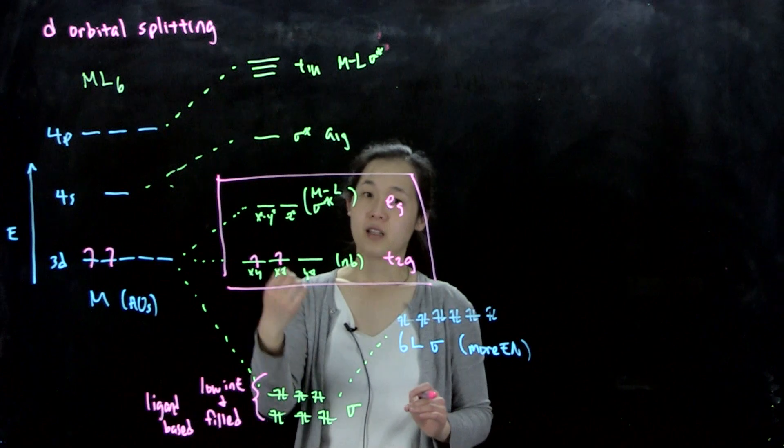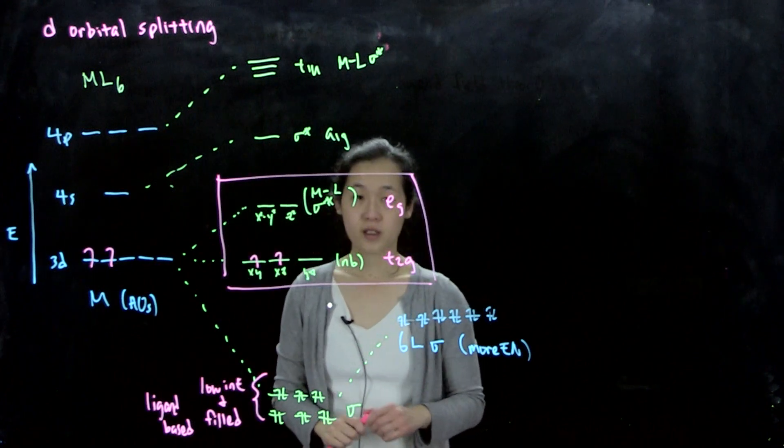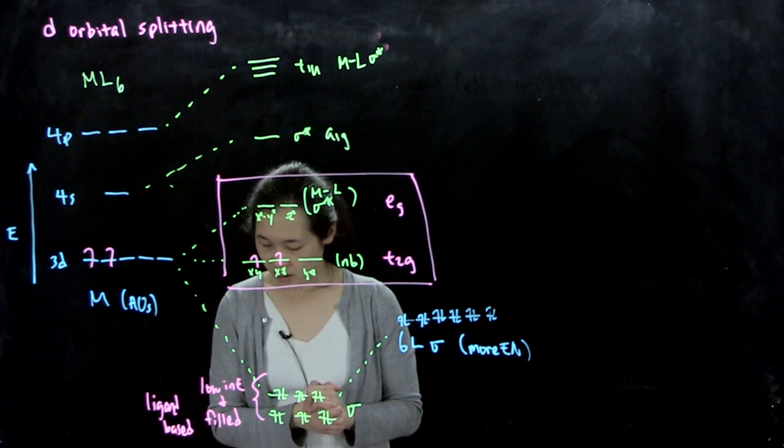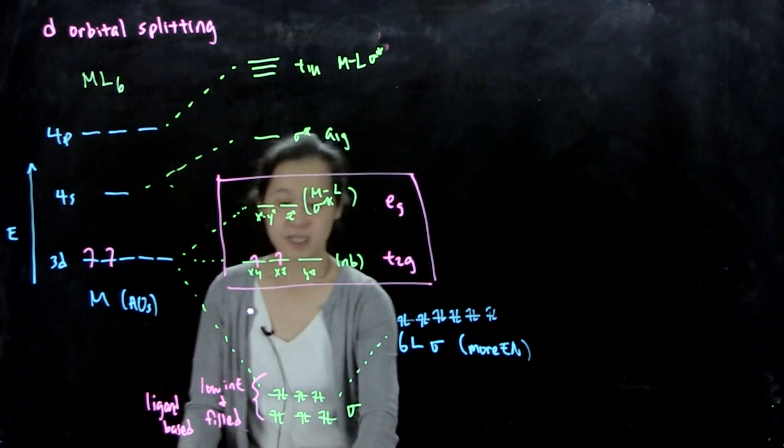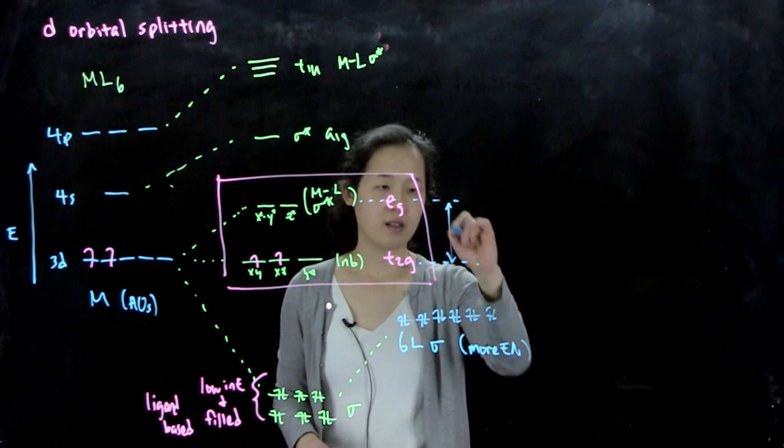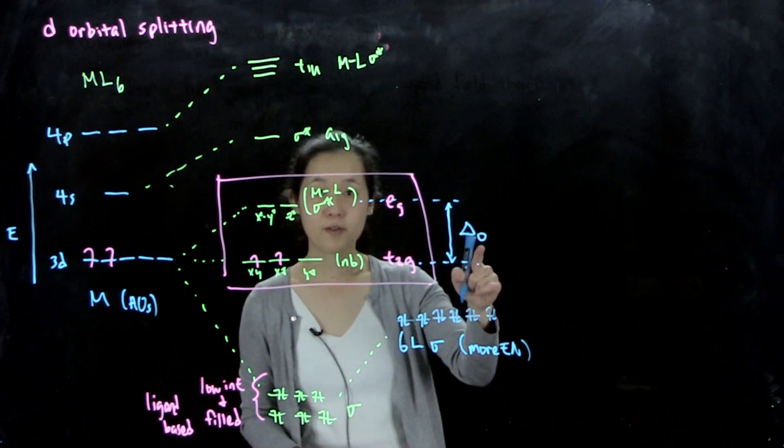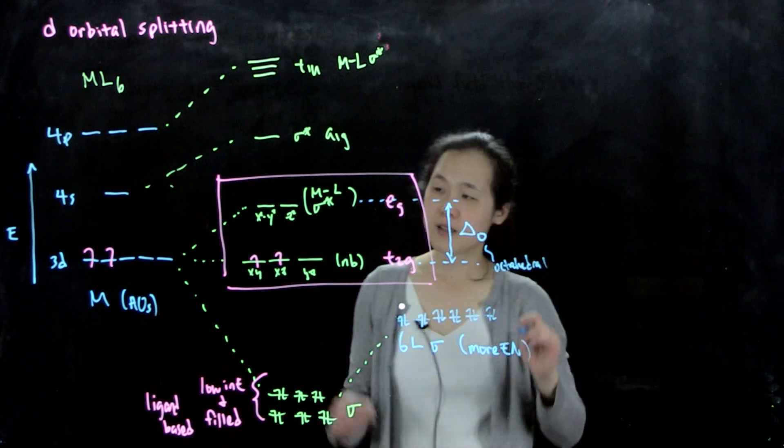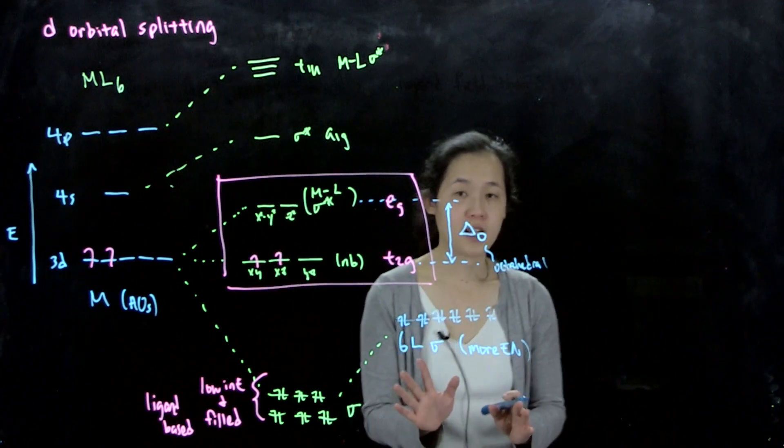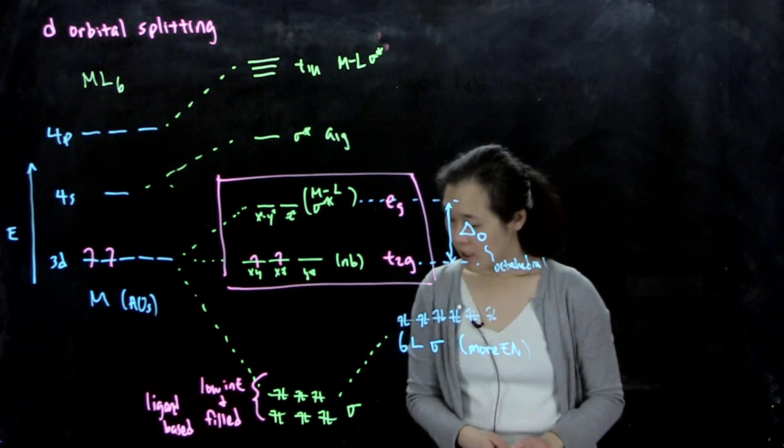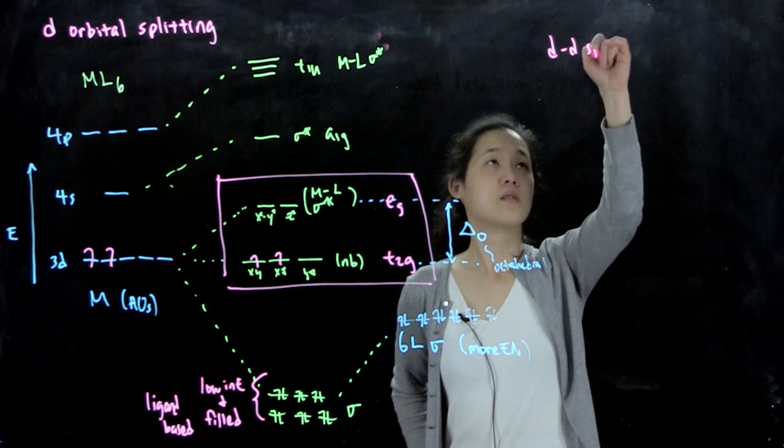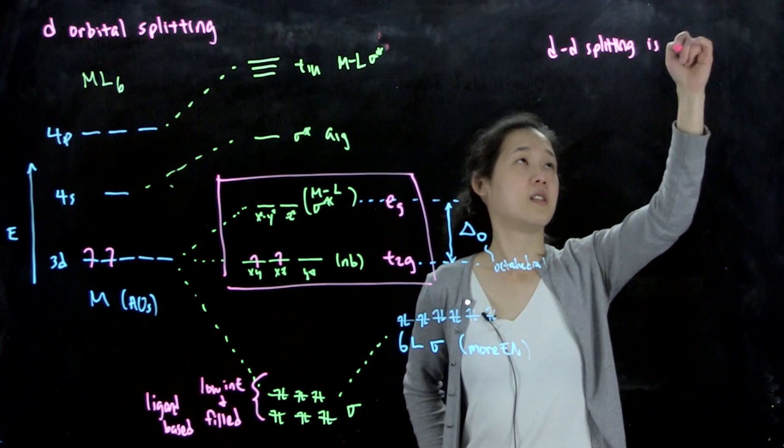From this we get spin, we get magnetism, we get our colors, we get reactivity. This is our general picture. This energy difference is called delta O. O is for octahedral. This energy difference, how much this is antibonding, is determined by the nature of your metal and also the nature of your ligands. I'll talk more about that in an upcoming lecture. This is the splitting pattern for octahedral. This is geometry dependent, or structure dependent.